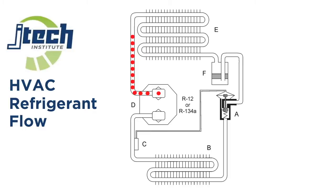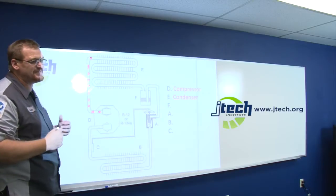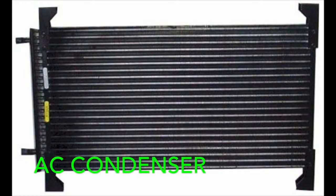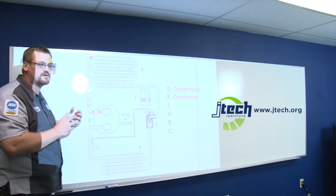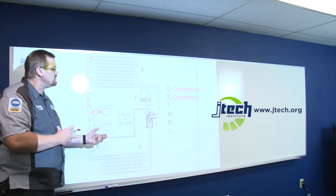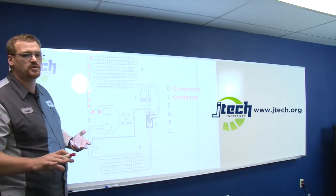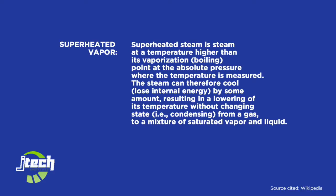As it comes out of our compressor, it works its way to our second component, which is E — our condenser. Just like the name sounds, the condenser is a simple device that utilizes airflow — the natural movement of a vehicle's airflow — to take BTUs out of the refrigerant and convert that vapor to a liquid, hence condensing it. When this initially comes in, it is what would be called a high-pressure superheated vapor. All superheated means is the temperature is actually up over the boiling point of the refrigerant.